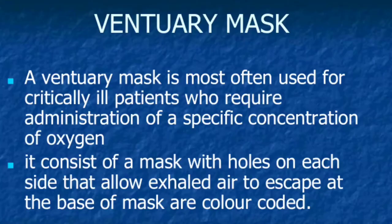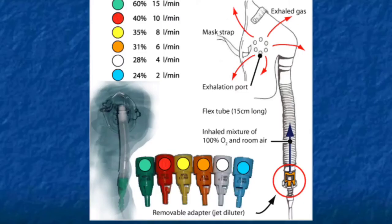Next, venturi mask. A venturi mask is most often used for critically ill patients who require administration of a specific concentration of oxygen. It consists of a mask with holes on each side that allow exhaled air to escape. At the base of the mask are color-coded connectors. The different color codes are: green, red, yellow, orange, white, and blue.